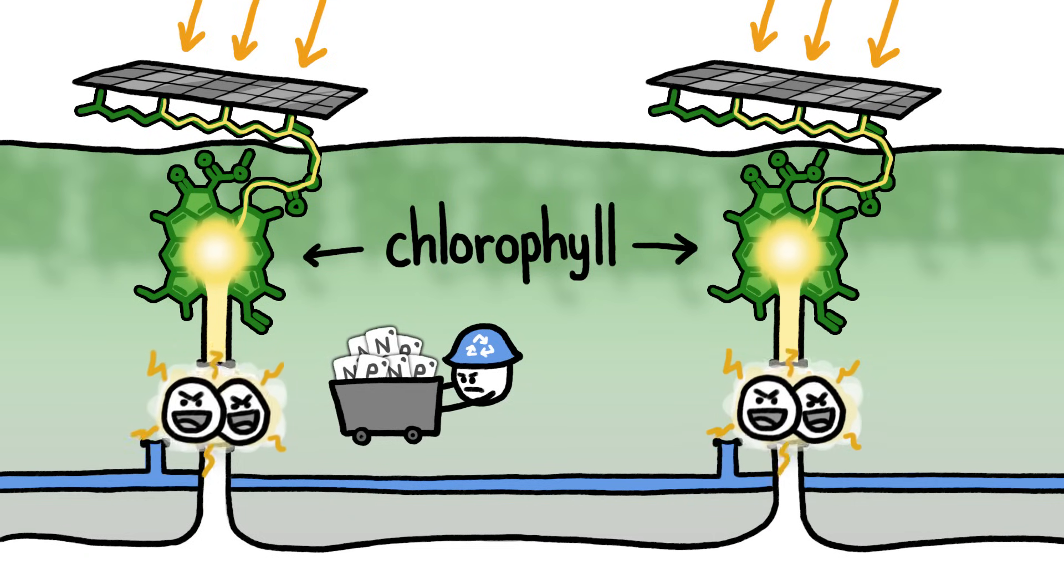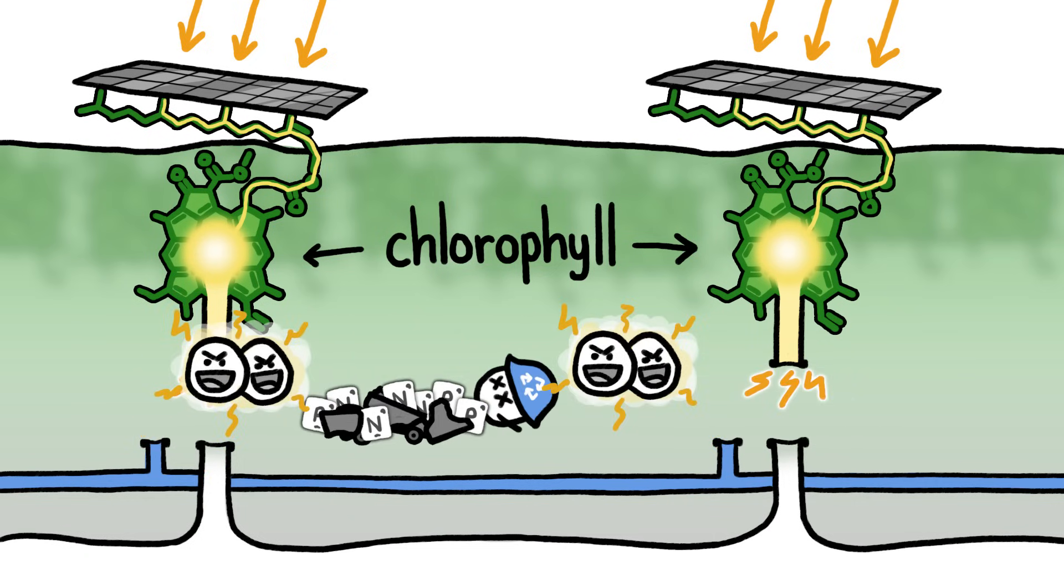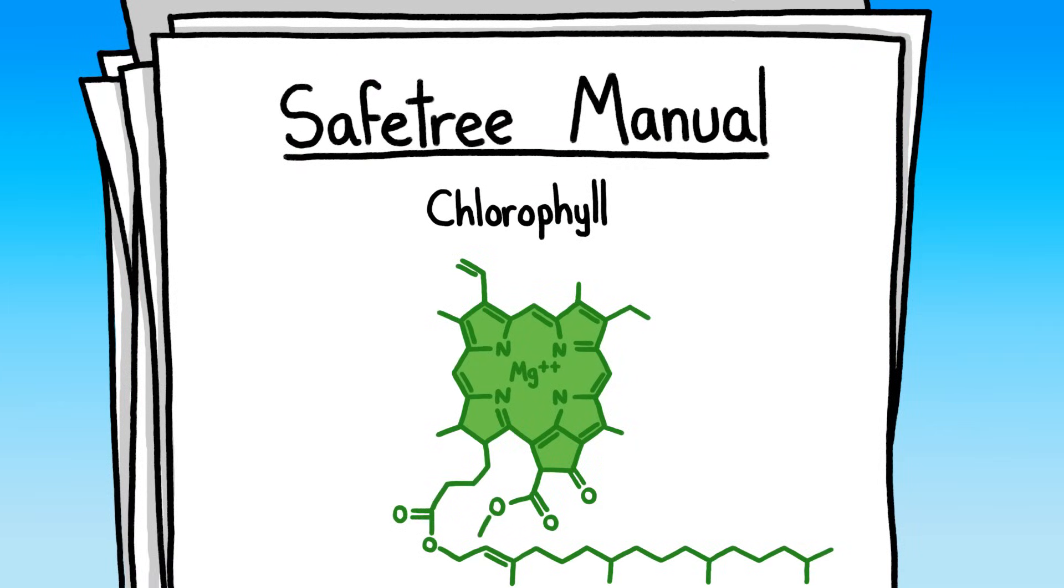These molecules wreak havoc, damaging the parts of the leaf that are in the process of recovering and transporting nutrients back to the rest of the tree. To keep this destruction to a minimum,